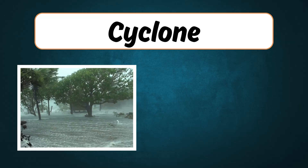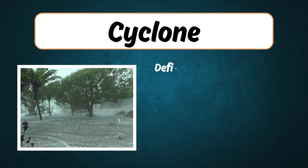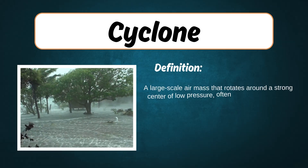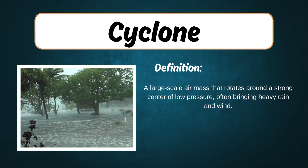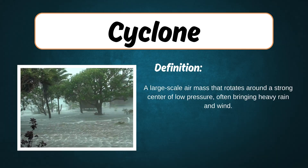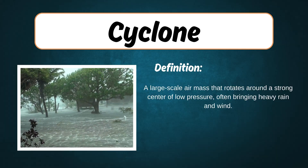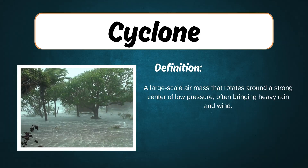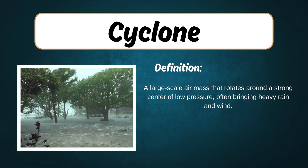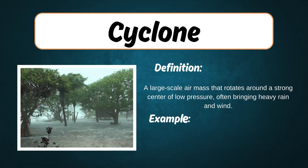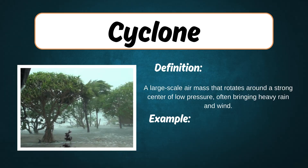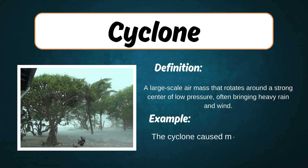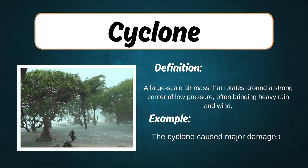Cyclone. Definition: A large-scale air mass that rotates around a strong center of low pressure, often bringing heavy rain and wind. Example: The cyclone caused major damage to the coastal town.